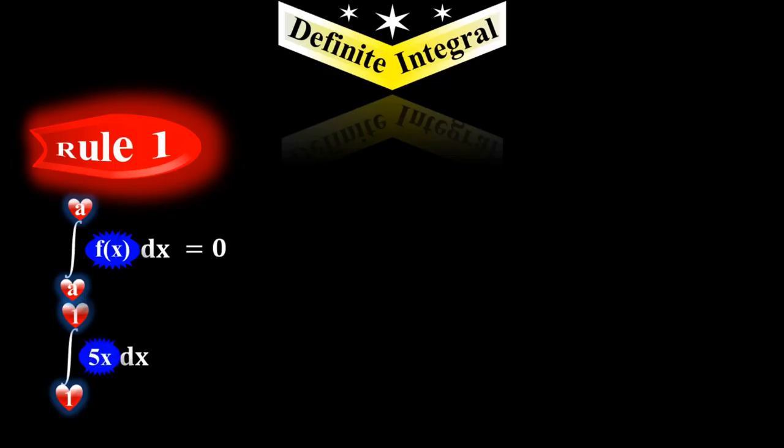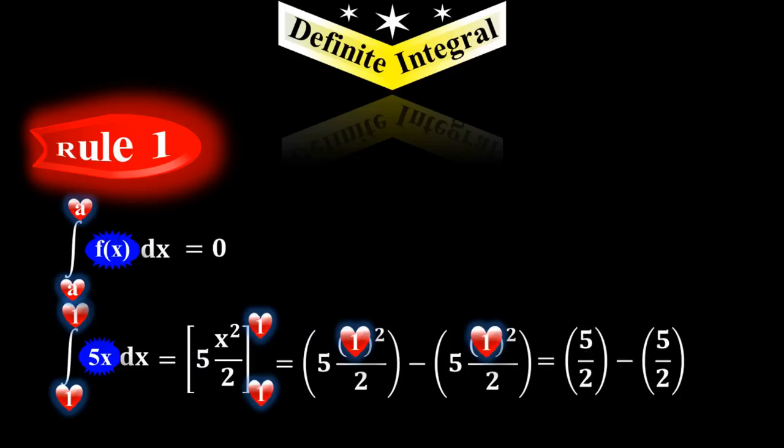When you integrate 5x with respect to dx, it gives us 5x²/2. Now put the upper limit and lower limit in this function. At the final stage, you will get zero. This is rule number one.